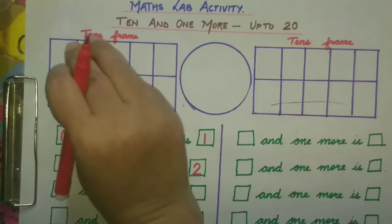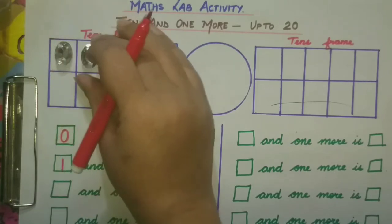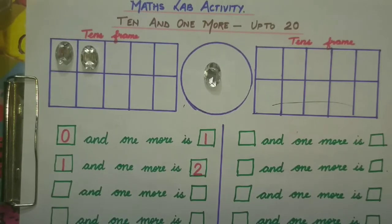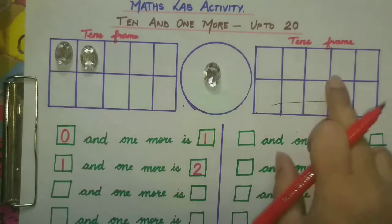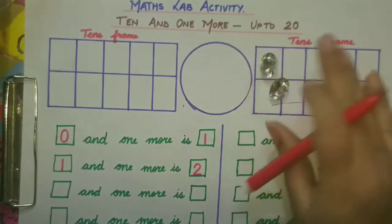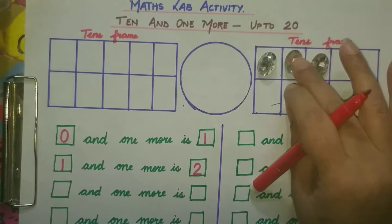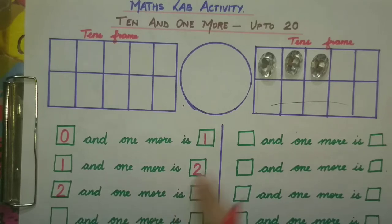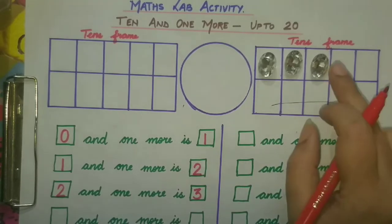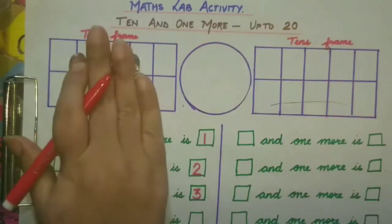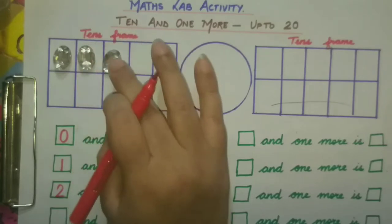2 and 1 more — so 2 and 1 more is how many? We will bring them to the second ten frame and arrange them here: 1, 2, 3. So 2 and 1 more is 3. Now we will bring these 3 stones to the first ten frame for our next question.